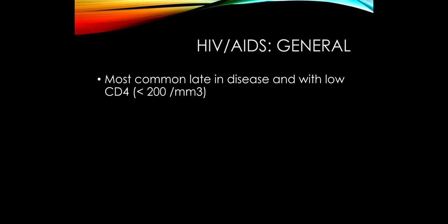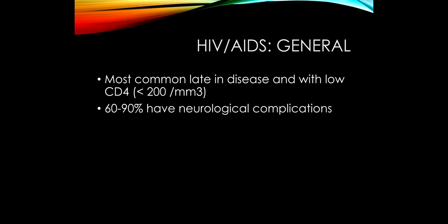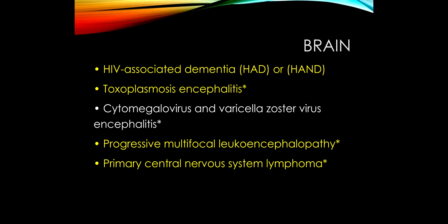HIV is another condition that commonly has neurologic complications, generally in individuals with a low CD4 count, often less than 200. Up to 90% of patients who are HIV positive will have some neurologic complication.